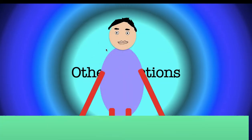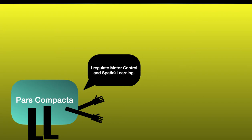The substantia nigra pars compacta is important for regulating motor control — motor refers to anything related to muscle movement — and also spatial learning. It makes sense that the pars compacta regulates motor control because dopamine plays a big role in motor control. Spatial learning is basically learning routes, like learning the way from your house to a nearby shop.